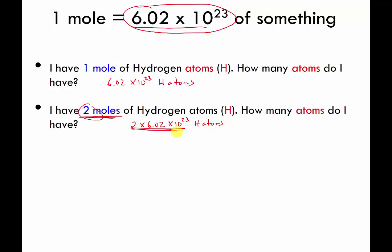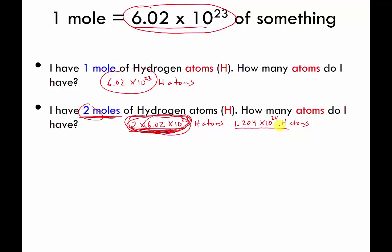Unfortunately you're not going to see the answer written as 2×6.02×10²³ — you have to be able to multiply this out, either in your head, on paper, or on a calculator. If you do this correctly on your calculator you should get 1.204×10²⁴ hydrogen atoms. So 2 times Avogadro's number is 1.204×10²⁴. If I told you I have two moles of hydrogen atoms, the correct answer is 1.204×10²⁴ hydrogen atoms.